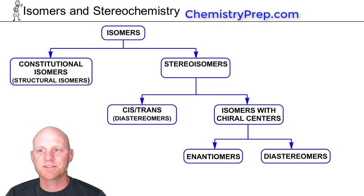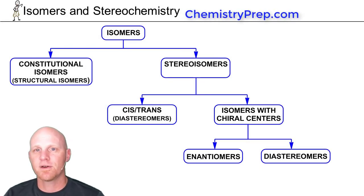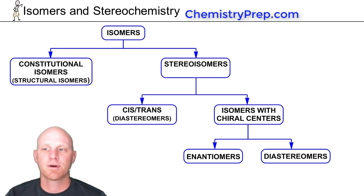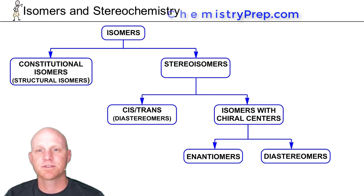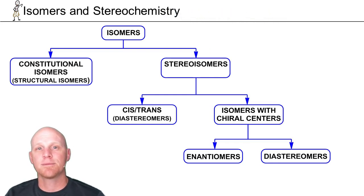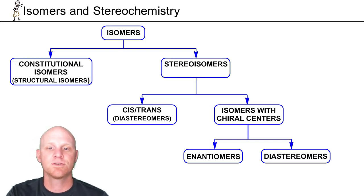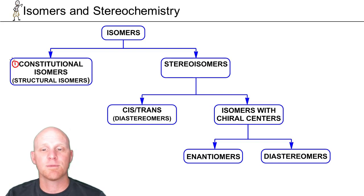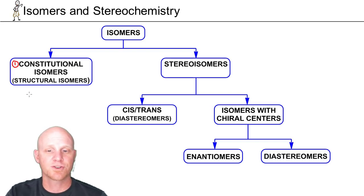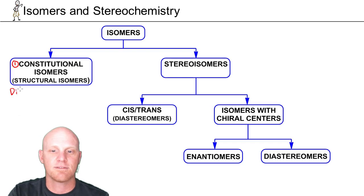Here we have a chapter on isomers and stereochemistry. First, let's talk about isomers. For two compounds to be isomers, they've got to have the same overall chemical formula — the same number of each type of atom. This comes in two varieties. The first type, which we're going to spend far less time on, are called constitutional isomers, also called structural isomers. These have a different bond connectivity.